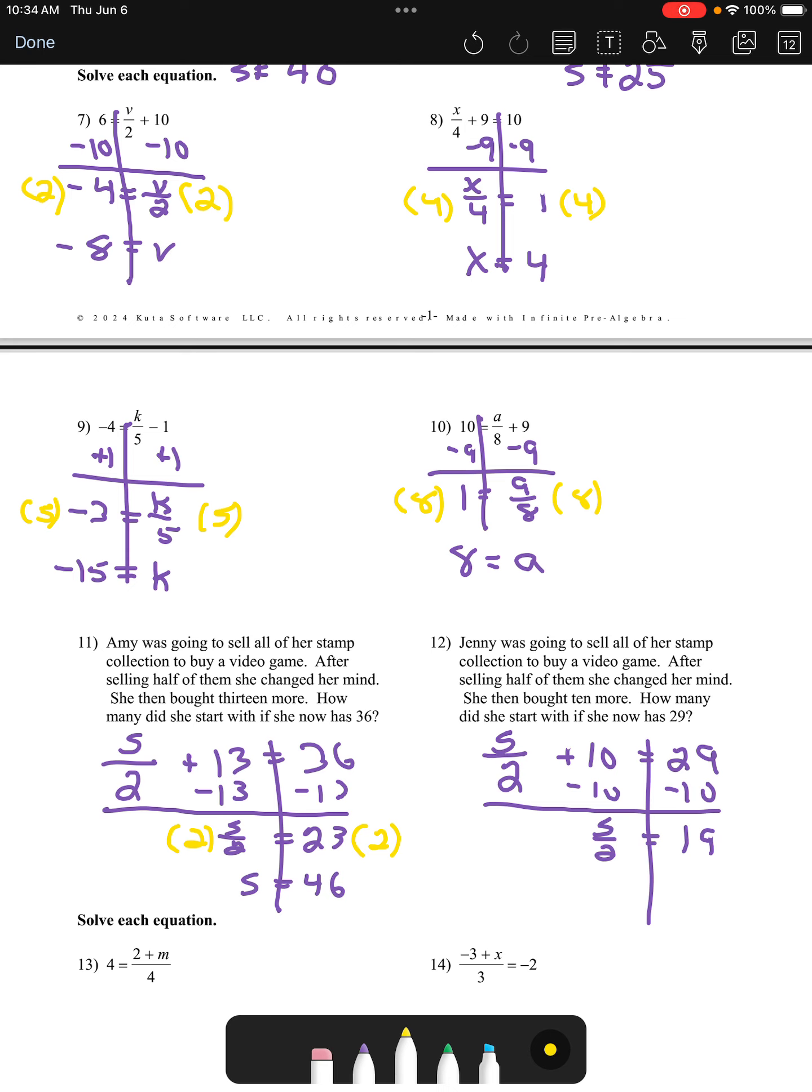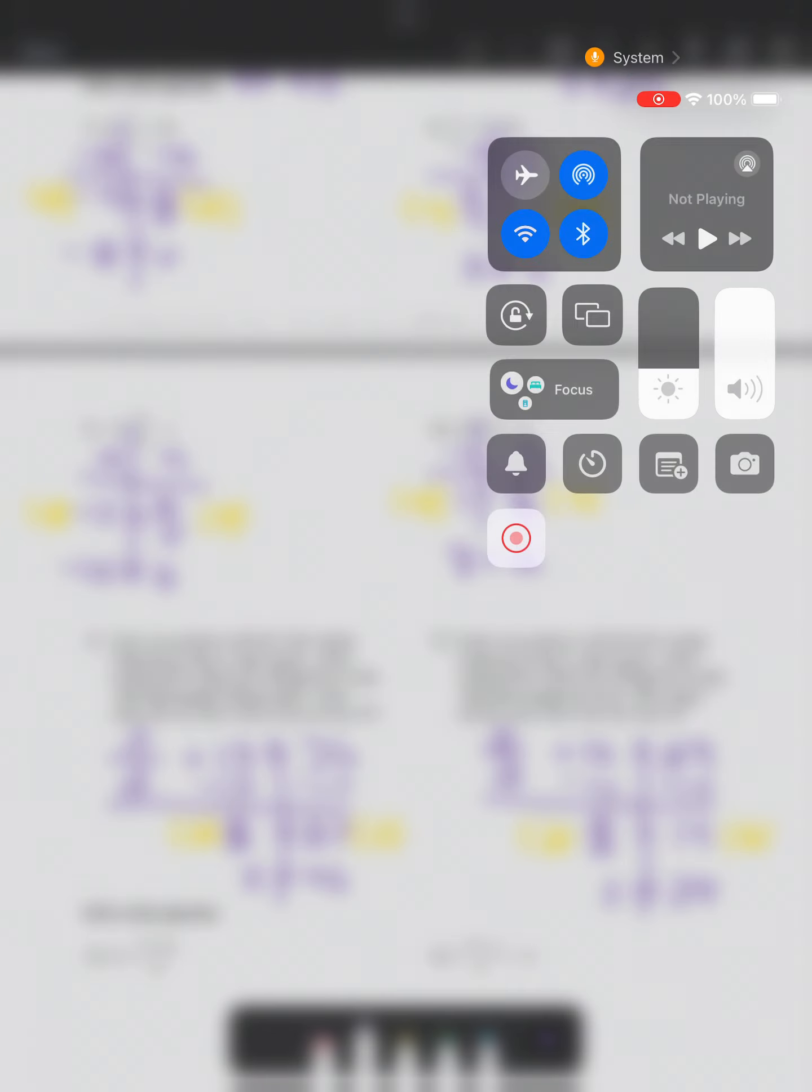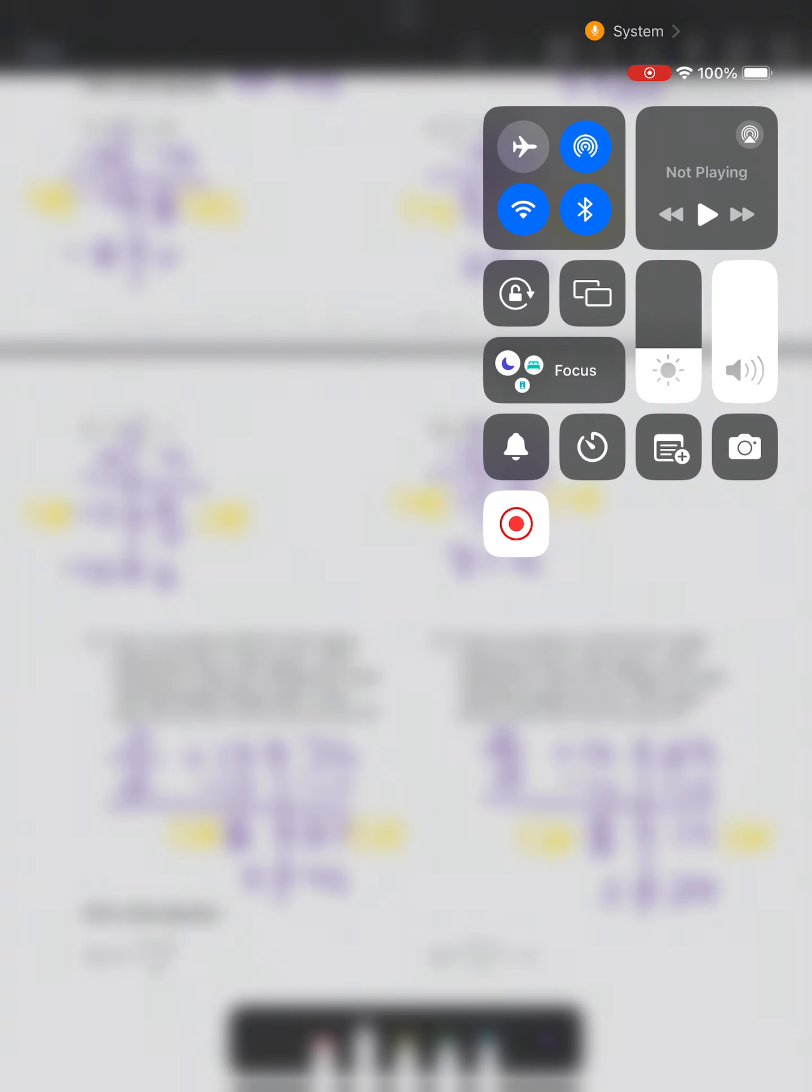We will subtract 10 from both sides of this equation to get s over 2 is equal to 19, and our last step is going to be to multiply both sides of this equation by 2 to find out that she started with 38 stamps.